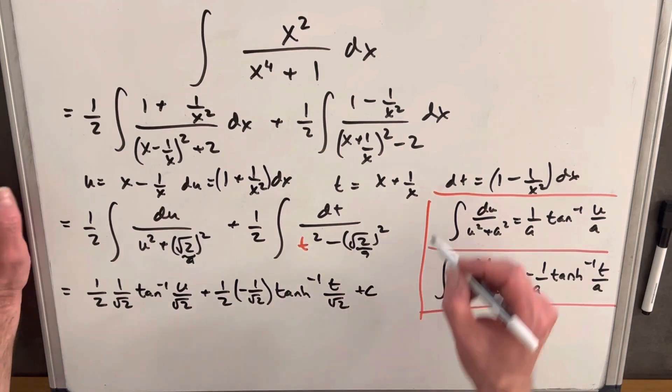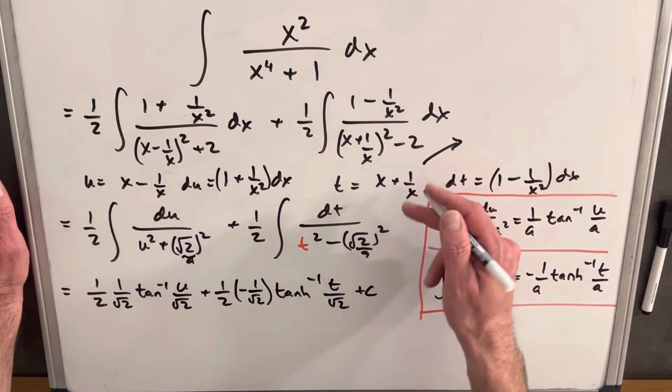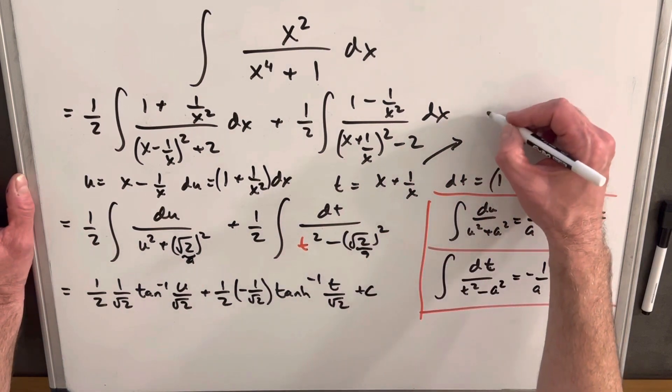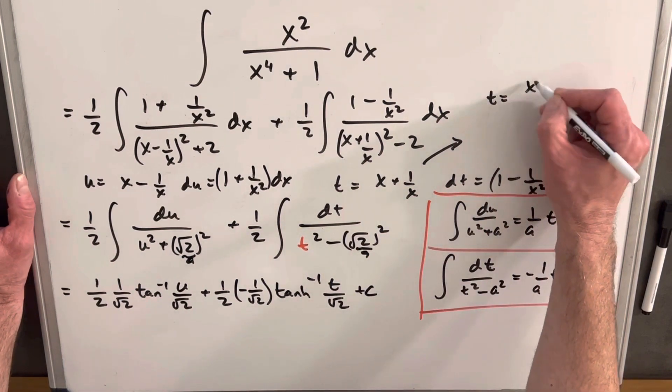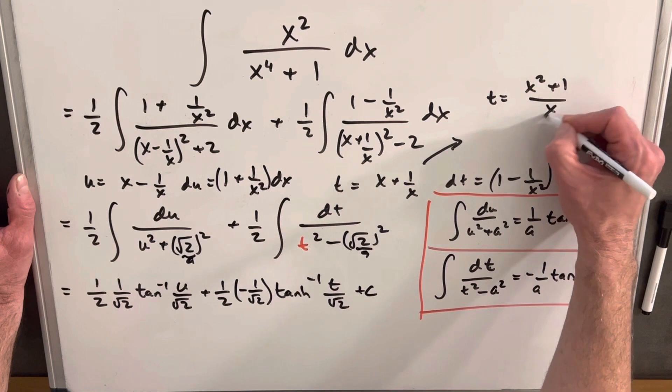And then before we back substitute, I'm just going to rearrange. You know what I like to do on this t is get a common denominator. So I'm going to write my t as x squared plus 1 over x.